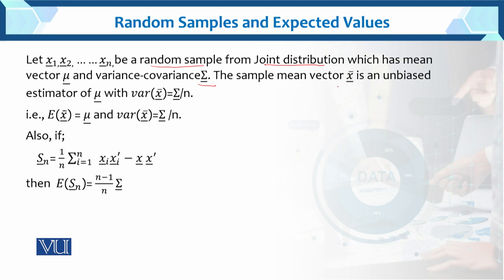The sample mean vector x-bar is an unbiased estimator of mu. As we have seen before, in the univariate case the expected value of x-bar equals mu. Similarly in the multivariate case, the expected value of x-bar vector equals mu, and the variance of x-bar equals the variance covariance matrix divided by small n. These are the results we need to prove.